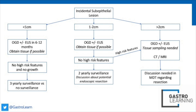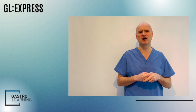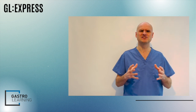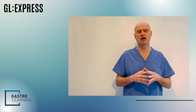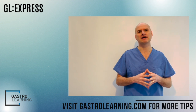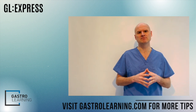If they stay below one centimetre, it's a really tricky conversation about what the benefits of surveillance are — in reality, we don't know, but it's likely to be minimal. We should probably offer these patients three-yearly surveillance with an OGD plus or minus an EUS if possible, but obtaining tissue and characterising the lesion here is very hard. This is certainly an unsatisfying area, and it again opens up that interesting conversation about resection.